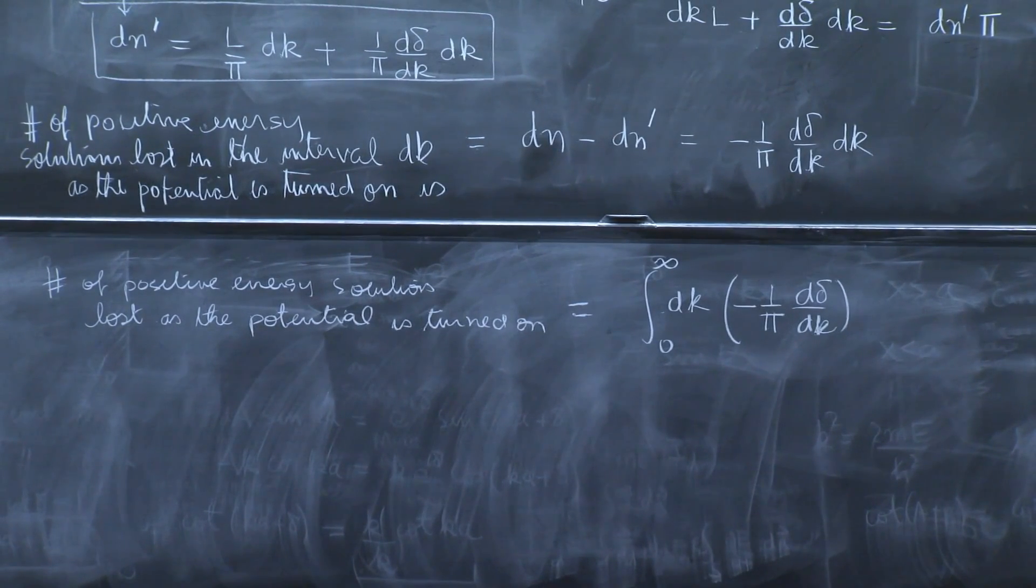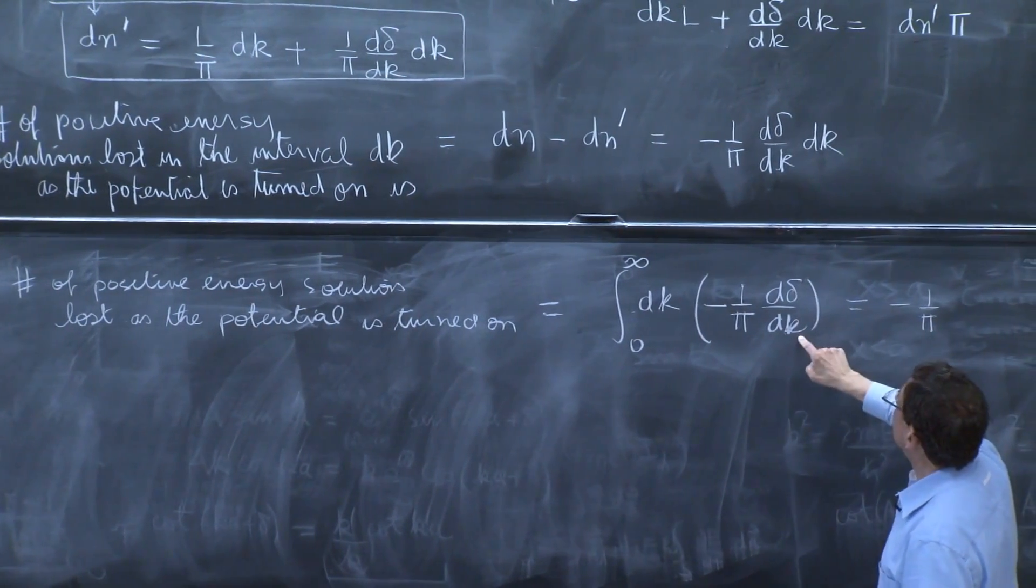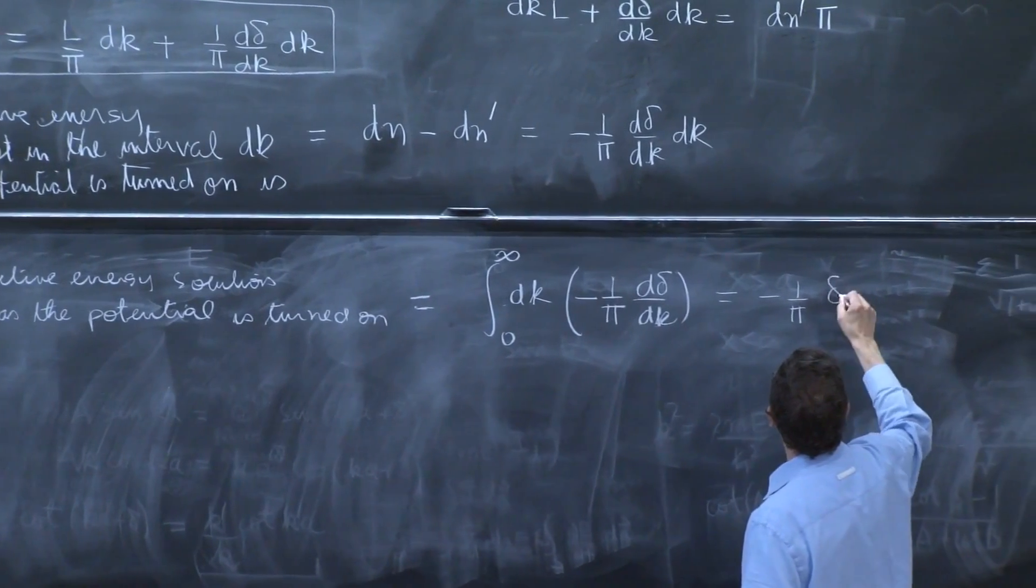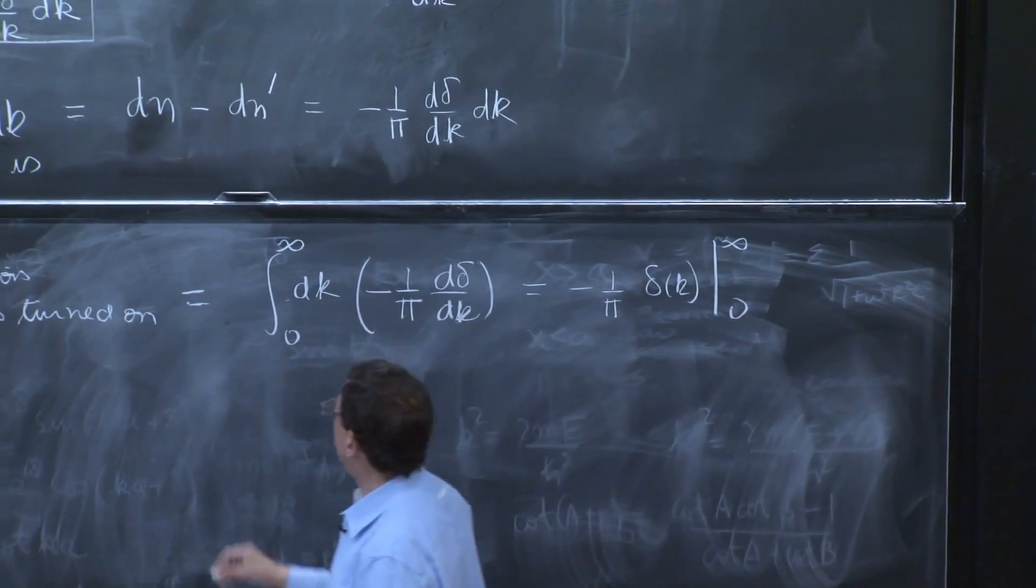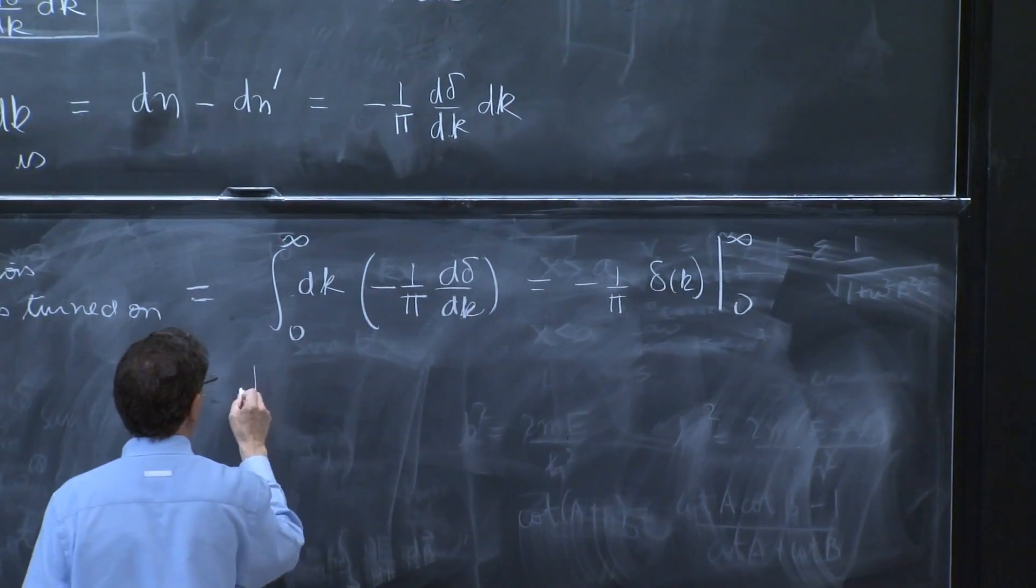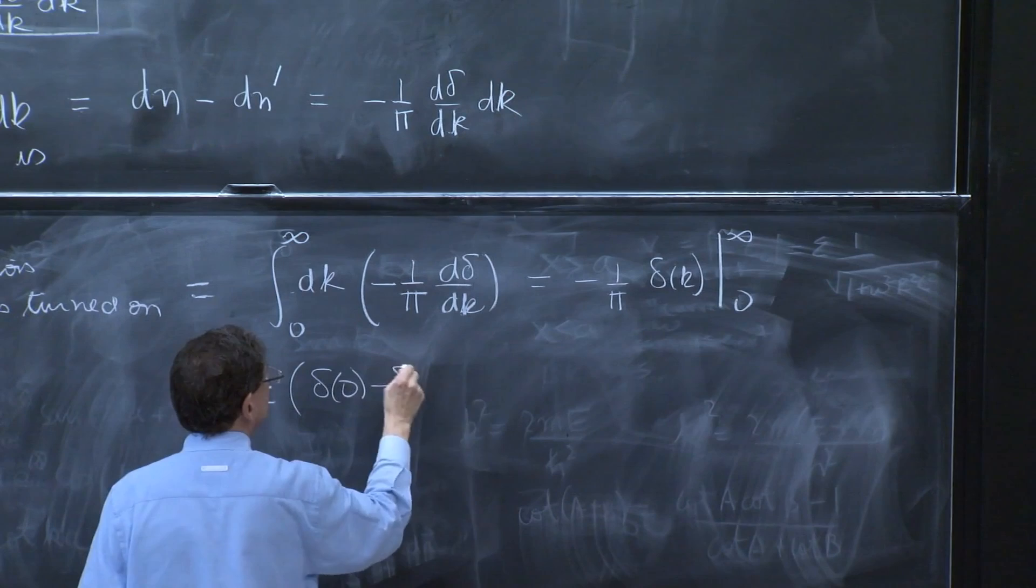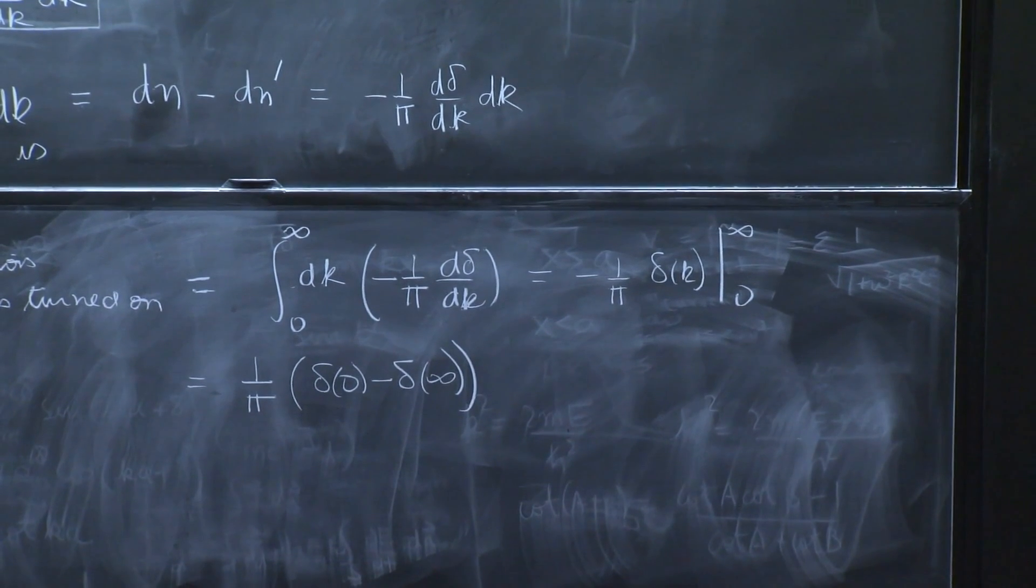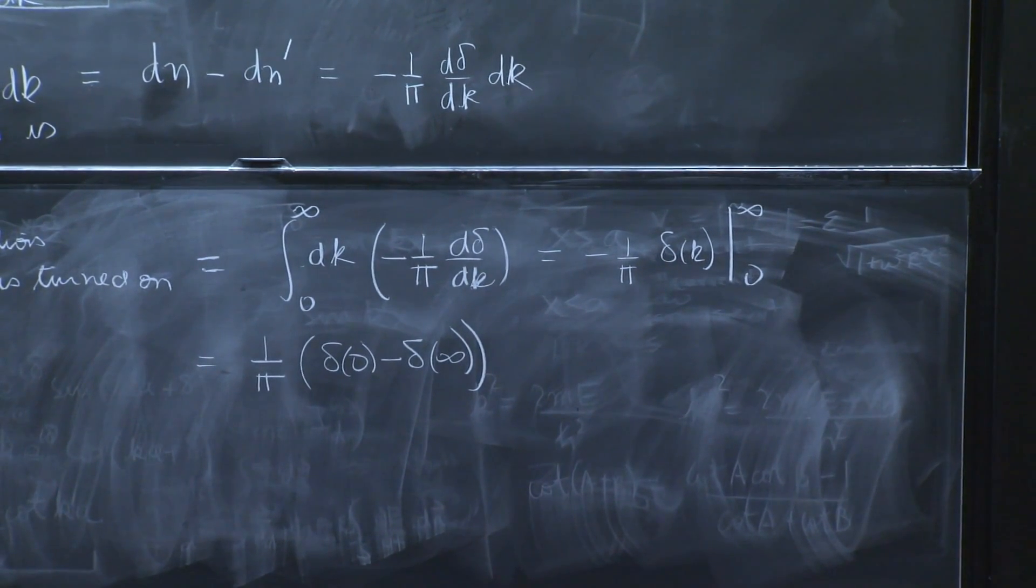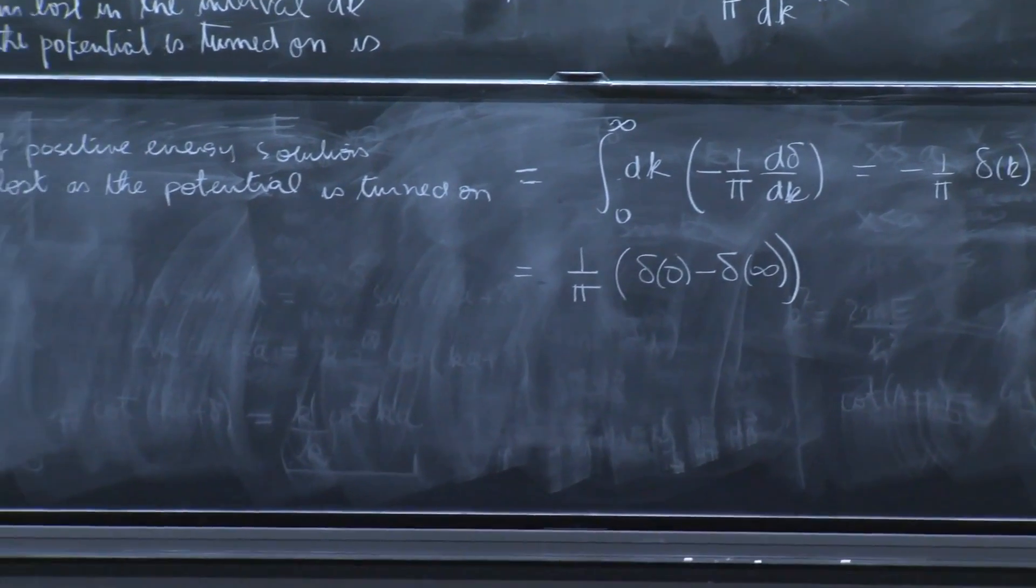But this is a total derivative. So this is minus 1 over pi delta of k evaluated between infinity and 0. And therefore, the number of states lost is 1 over pi, because of the sign, delta of 0 minus delta of infinity. So we're almost there. So remember, this is the number of positive energy solutions lost.